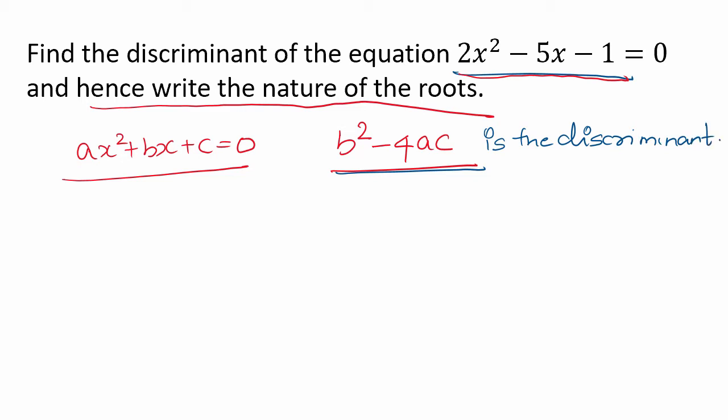Next, b² - 4ac - based on this value, we can tell the nature of the roots. If b² - 4ac is greater than 0, there are two distinct real roots. If it is equal to 0, there will be two equal real roots.